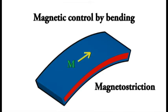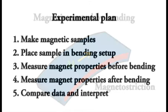We plan to study this effect in our magnets by making magnetic samples, then bending them while observing their magnetic properties. Before we study how bending affects very small magnets though, first we want to understand how bending affects big magnets that you can see with your eyes.